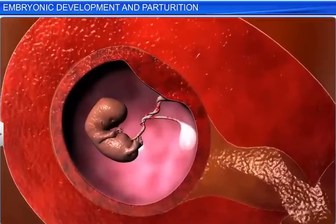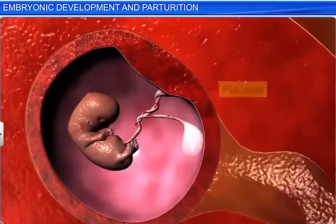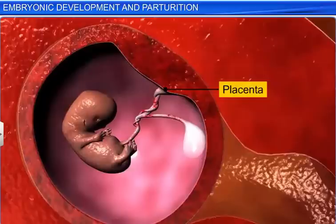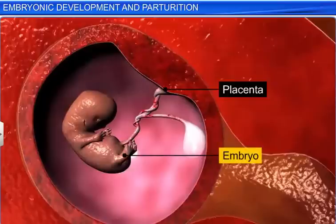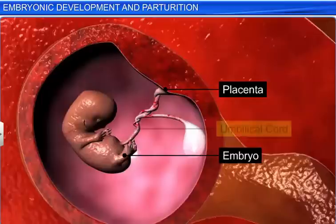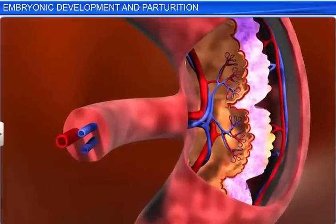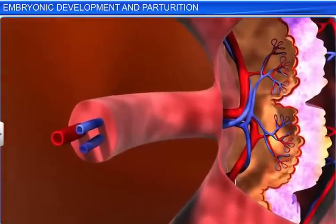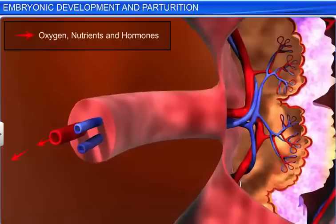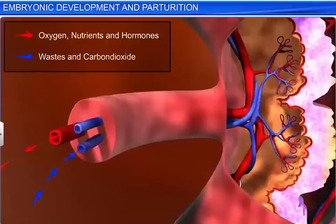Initially, this embryo is attached to the placenta, but as it starts to develop, it moves away from the placenta and remains connected to it via an umbilical cord. The placenta is an important structure that supplies the embryo with oxygen, nutrients, and hormones, as well as carries waste products from the embryo back to the mother.